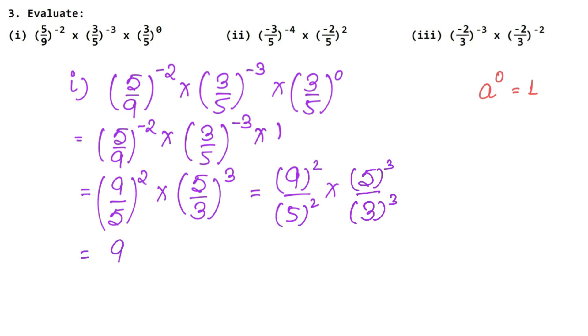Now we have to evaluate this. So see, 9 is 2 power, so 9 is 2 times. 5 power is 2, so 5 is 2 times. 5 power is 3, so 3 times multiply. And 3 power is 3, so 3 times multiply.